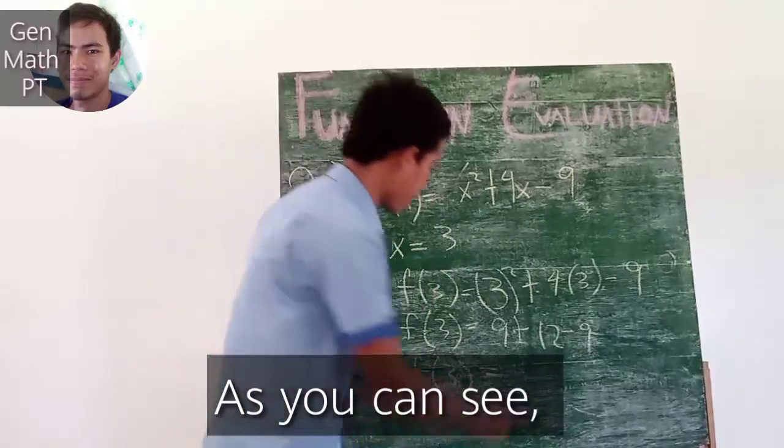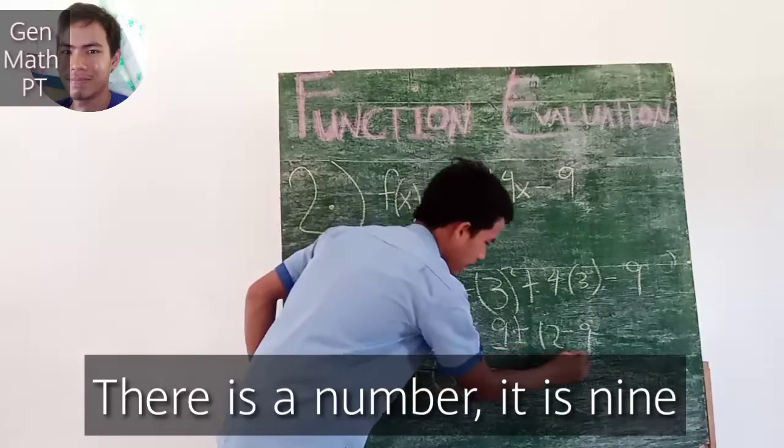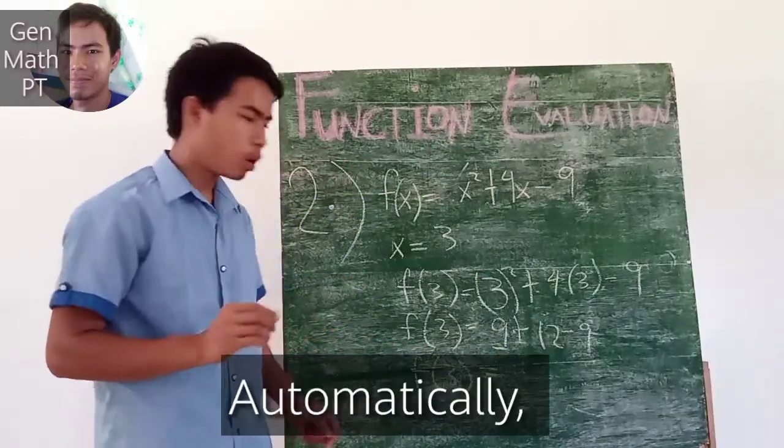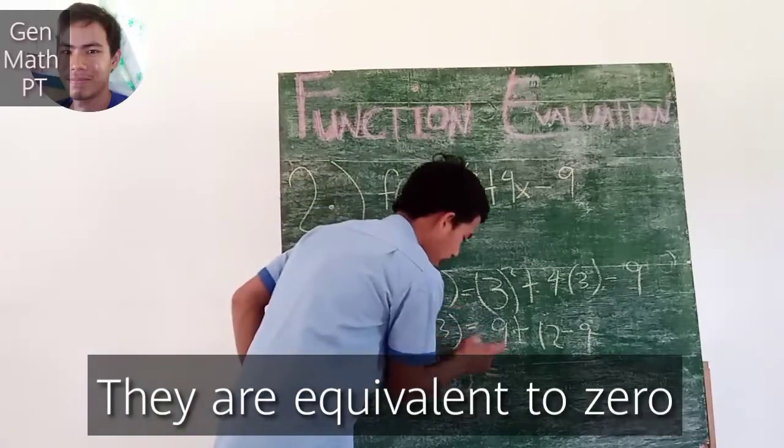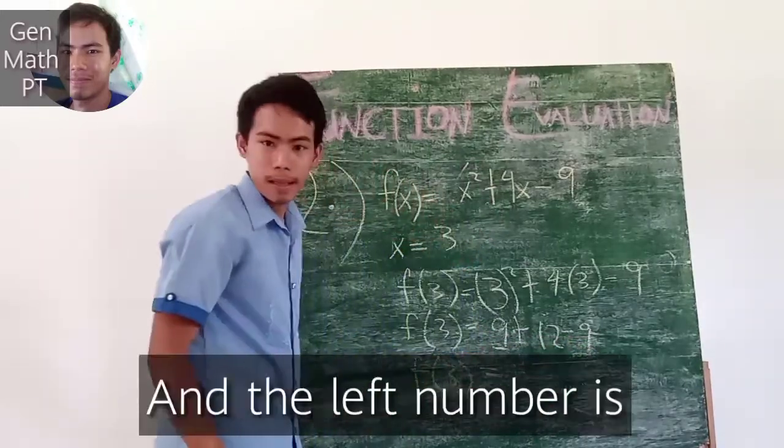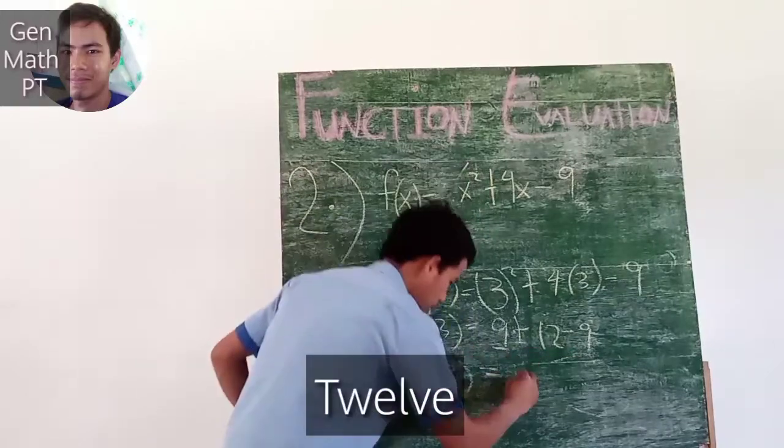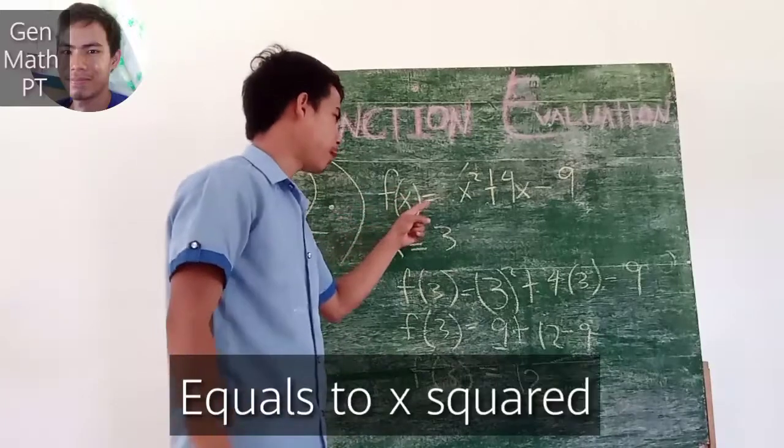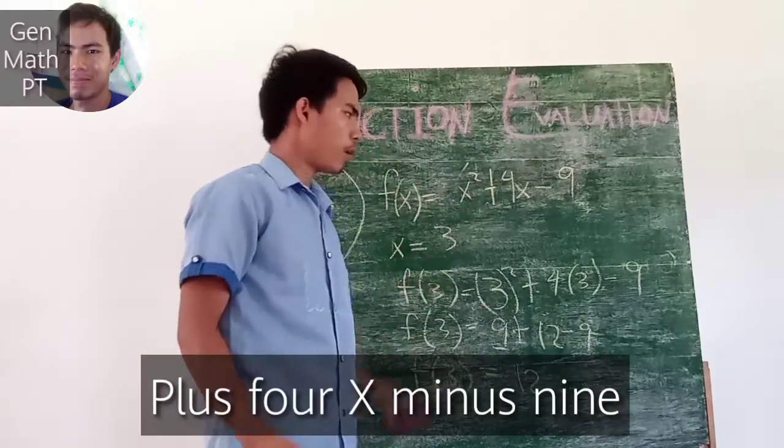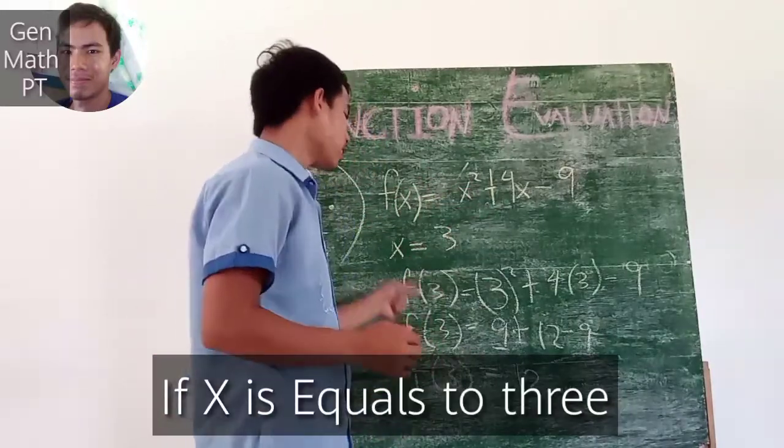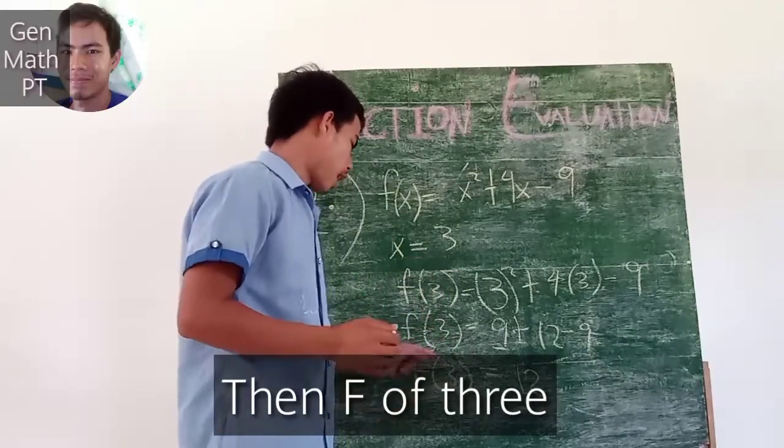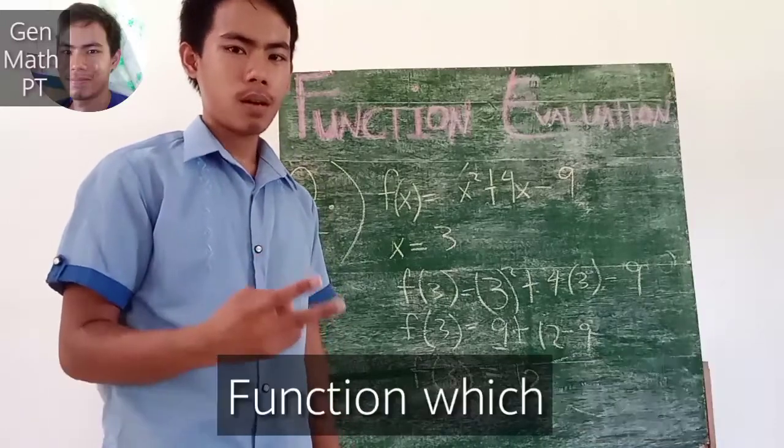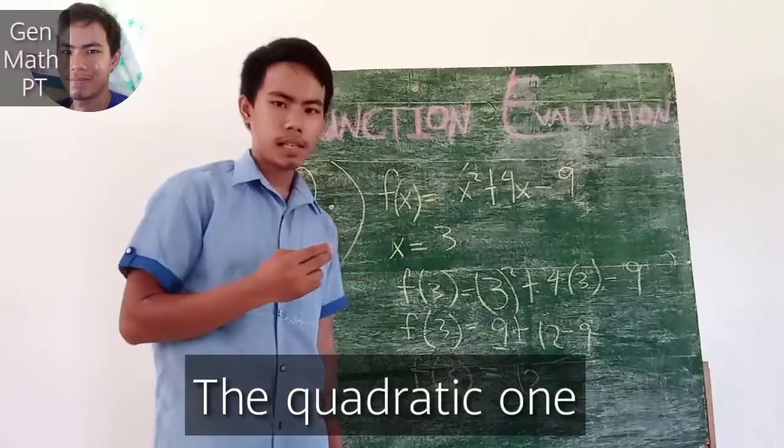As you can see, there is a number which is 9, different sign but the same number. Therefore, automatically, we are equivalent to 0 because 9 minus 9 equals 0, and the last number is 12. Therefore, we conclude that f(x) = x² + 4x - 9, if x is equal to 3, then f of 3 is equivalent to 12. That is the second type of function, which is the quadratic one.